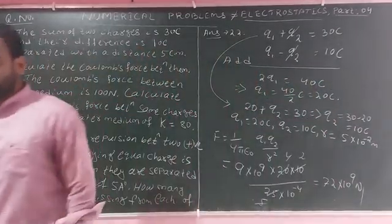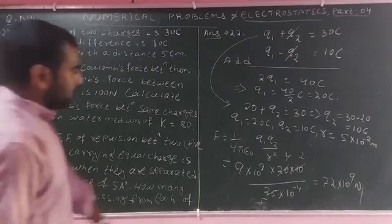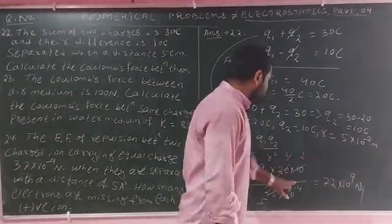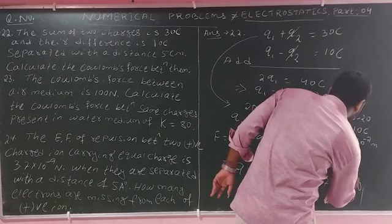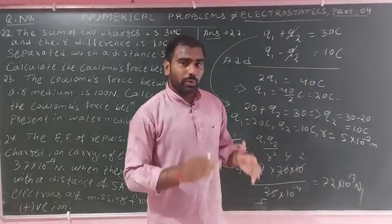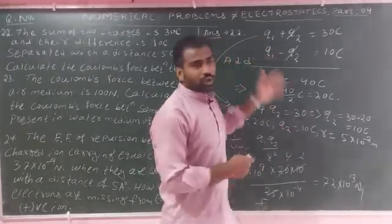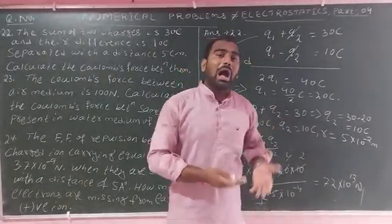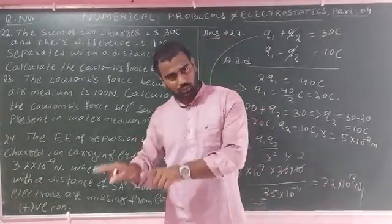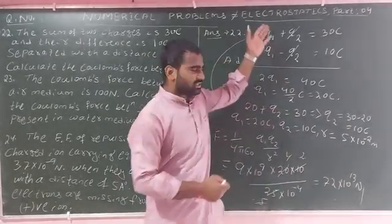Combining powers of 10: 10 to the power 9 multiplied by 10 to the power minus 4 gives 10 to the power 5, so the answer simplifies. The force is approximately 30 newtons for question 22.